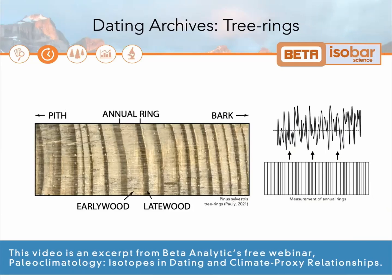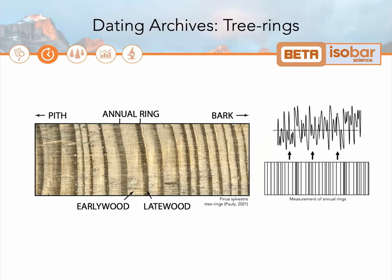Now getting into dating archives themselves. Tree rings are a very common paleoclimate archive, particularly spanning the last few centuries. In order to date tree rings, the individual rings must first be counted and measured. Then each tree within a cohort must be statistically cross-dated against each other to build a chronology floating in time.